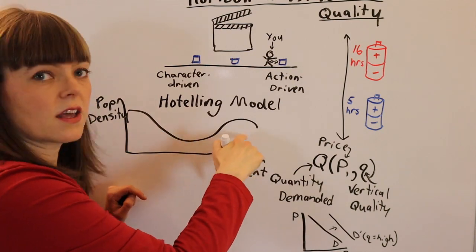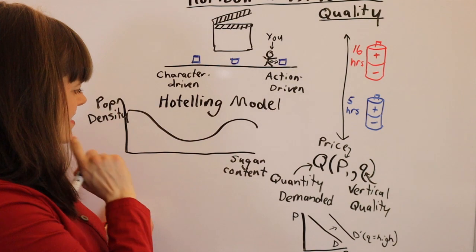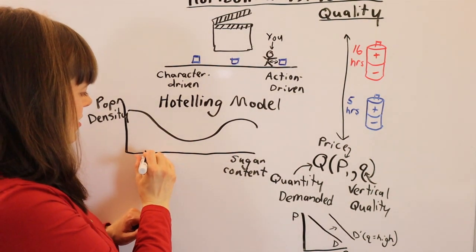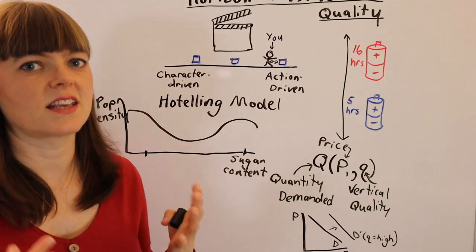This is the density of the population matched at every level of preference. Of course, the companies are going to locate more likely in the places where the population density is highest.